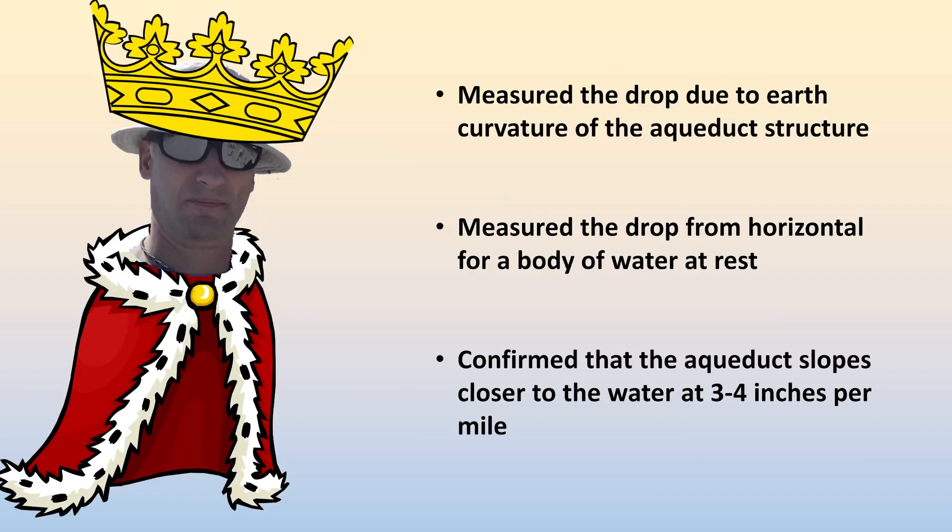So just to recap, JT acknowledges that he measured the drop due to earth curvature in the concrete walls. He also measured the drop from horizontal for a body of water that is at rest. And finally, he confirmed that the aqueduct slopes down towards the water level at three to four inches per mile. And that, ladies and gentlemen, is why he is king of the curve.